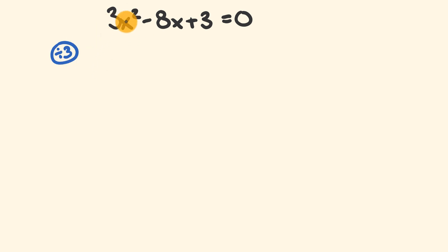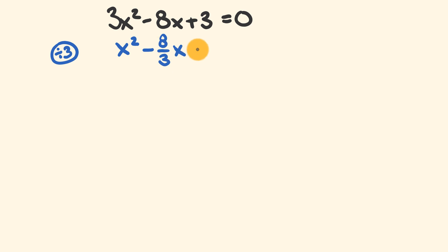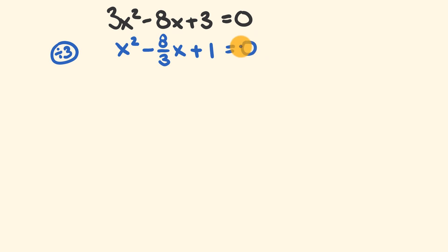So 3 divided by 3 is equal to 1, so we end up with x squared. Subtract — we have 8 divided by 3, that's over x, plus 3 divided by 3, which is equal to 1. And this is all equal to 0 divided by 3, which is equal to 0. So we've just rewritten that out.